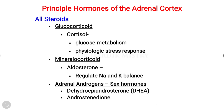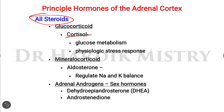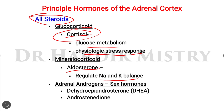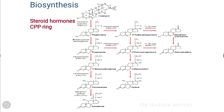The principal hormones of the adrenal cortex are all steroid hormones. First, glucocorticoids — this includes cortisol, which helps in glucose metabolism as well as the physiologic stress response. Second, mineralocorticoids — aldosterone, which regulates the sodium-potassium balance. Third, adrenal androgens — including dehydroepiandrosterone (DHEA) and androstenedione.